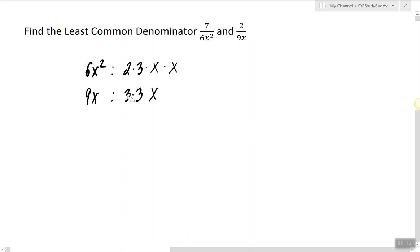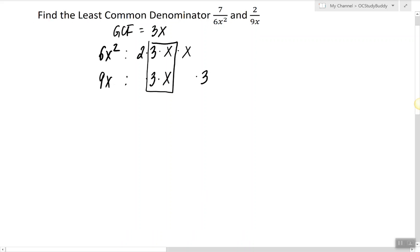Now we're going to write it in such a way that their common factors overlap and what they don't have in common we'll write on the side. So here we can clearly see what they have in common and what not. What they have in common will be the greatest common factor. The greatest common factor in this case is 3x, but that's not what we're looking for.